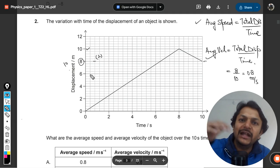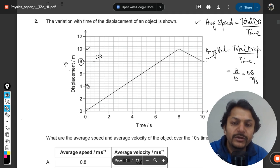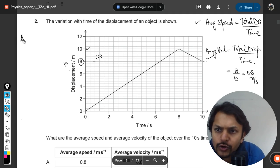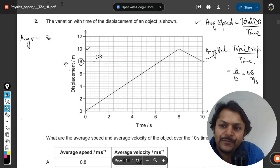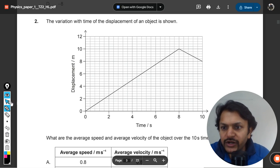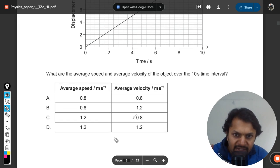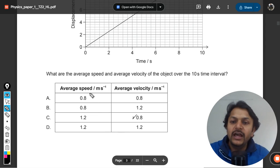The average speed will be 12 divided by 10, which equals 1.2 meters per second. For velocity it will be 0.8, and for speed it will be more than the velocity, which is 1.2.